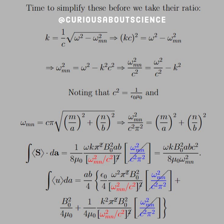So what we see is that the integral is simplified for the pointing vector to omega k b naught squared abc squared over 8 mu naught omega squared mn. Similarly,